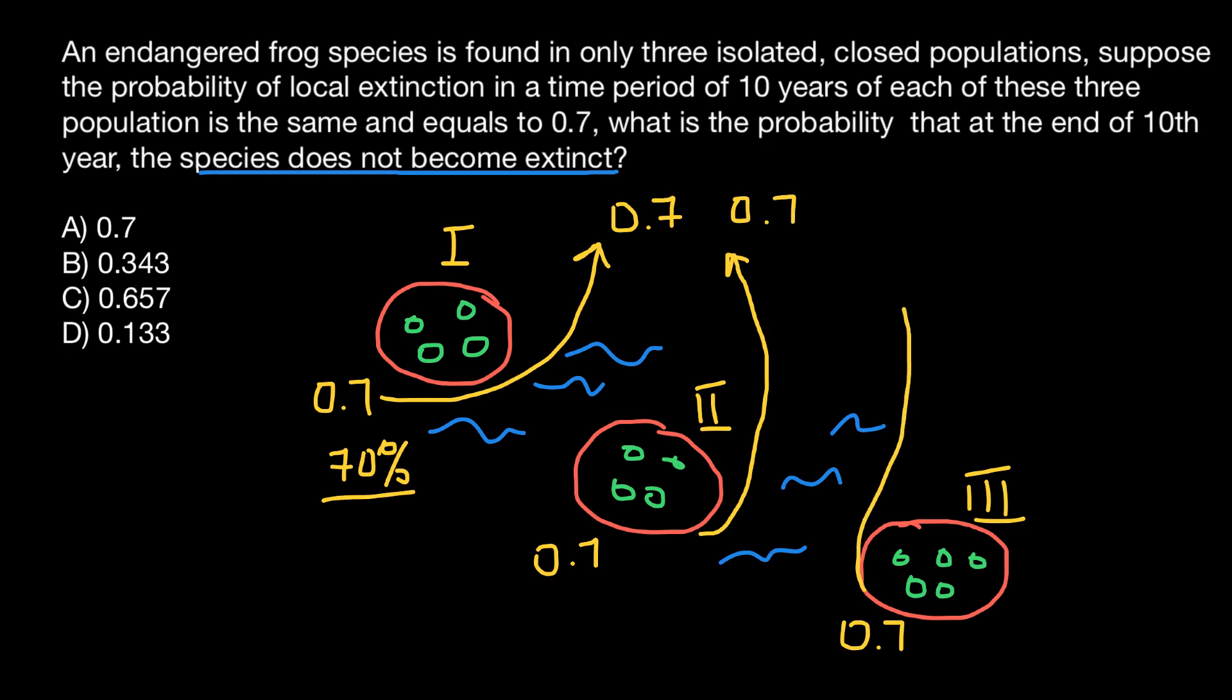And probability that they would go extinct on the island number three is also 0.7. So combined probability that they would go extinct on all three islands, so this species completely would go extinct, would be 0.7 multiplied by 0.7 and multiplied by 0.7. So this tells us that this event would happen simultaneously on all three islands. Not necessarily at the same period of time, but during 10 years. And the answer would be 0.343.